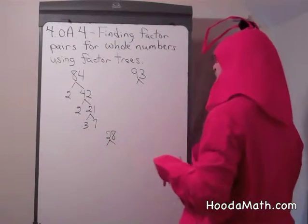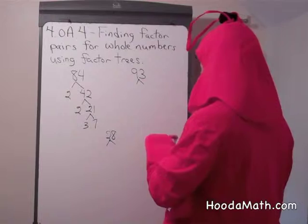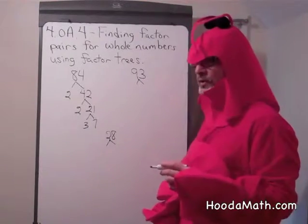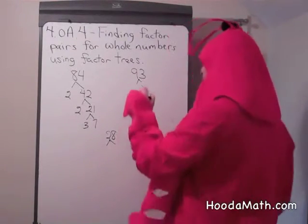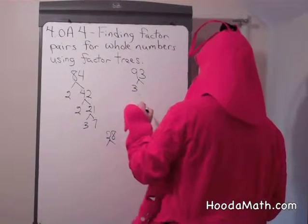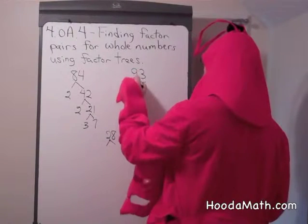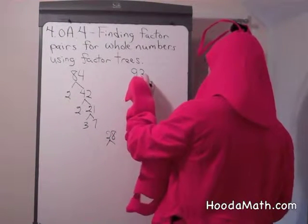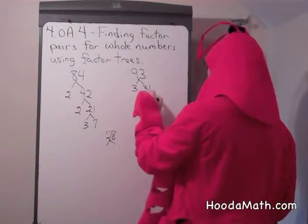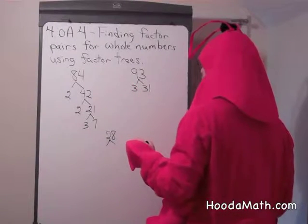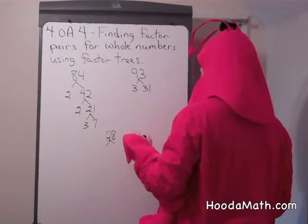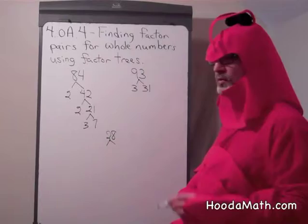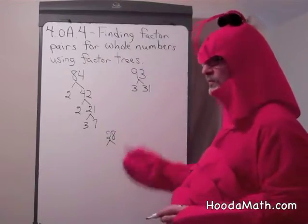Factors of 93. Well, 9 plus 3 is 12, so we know it's divisible by 3. 3 goes into 9, 3 times; 3 goes into 3 once — giving us 31. And 31 is a prime number, so there are only two factors.